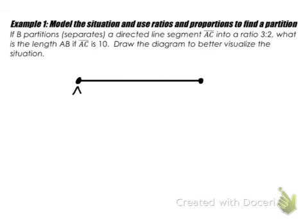So here's our segment AC, and then since B partitions, it means it's separating AC into two parts. So since the partitions in AC created by B turns the segment into a ratio of 3 to 2, I'm going to make sure my partitions are a little bit longer for AB, so B is going to be right around here. There's B. So then we have to figure out what the length of AB is if AC is 10.